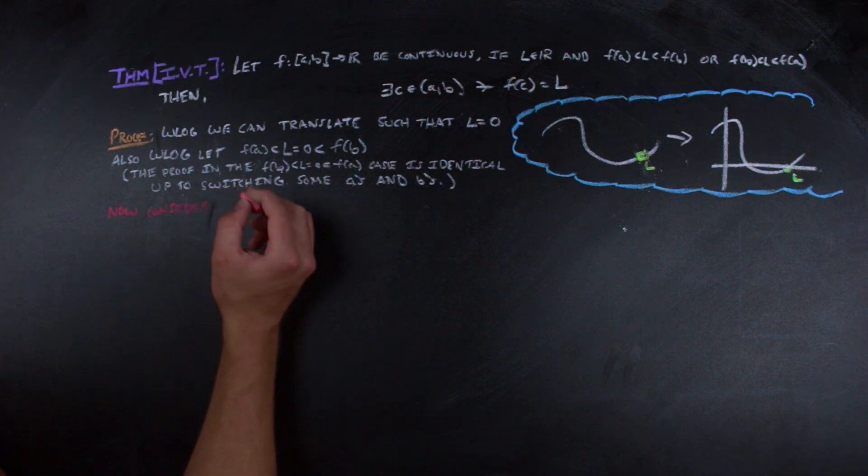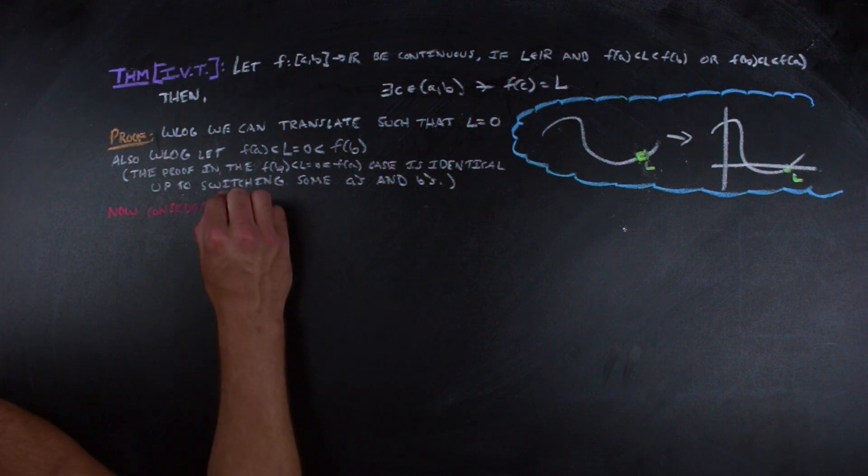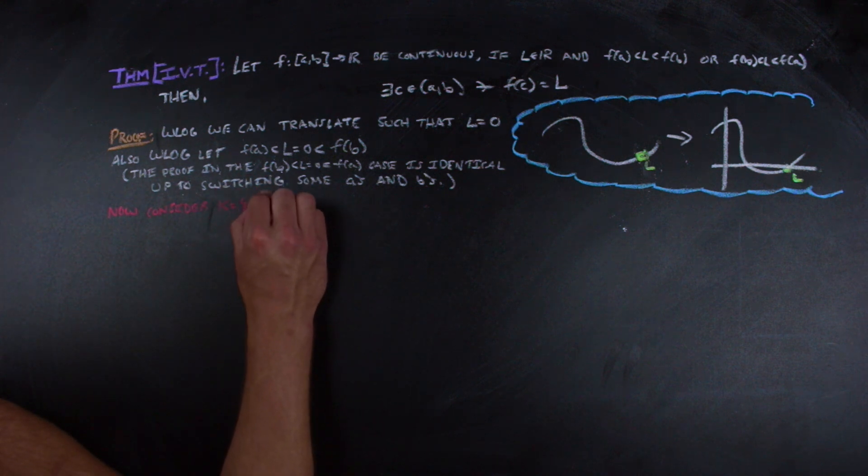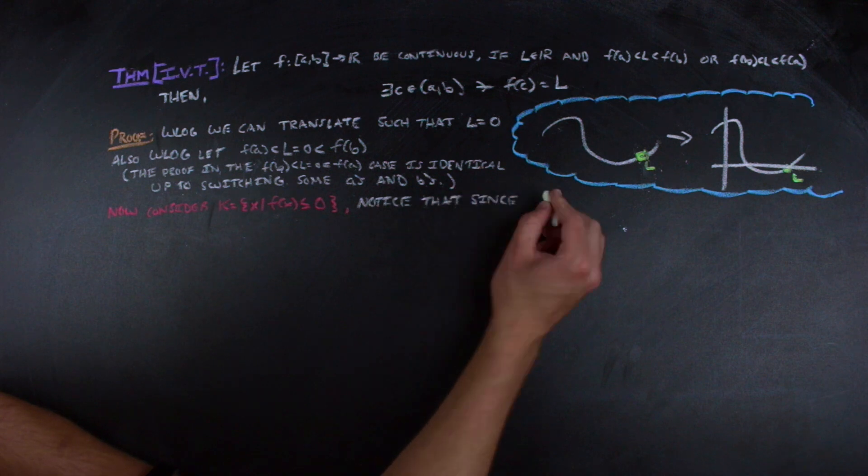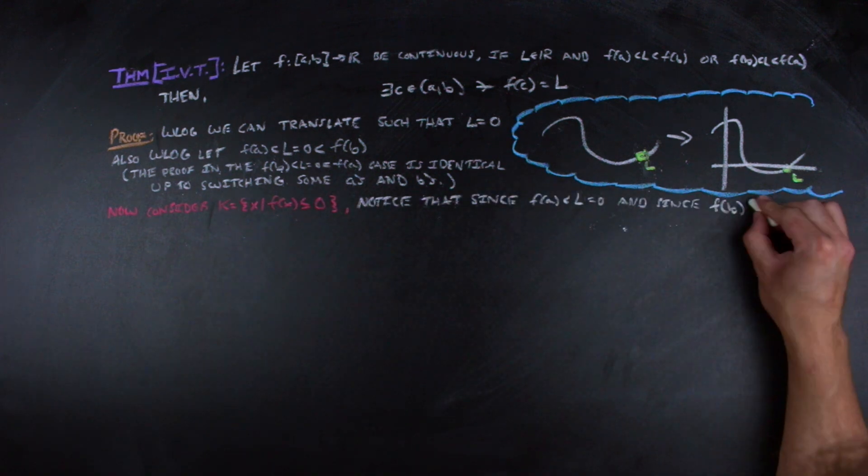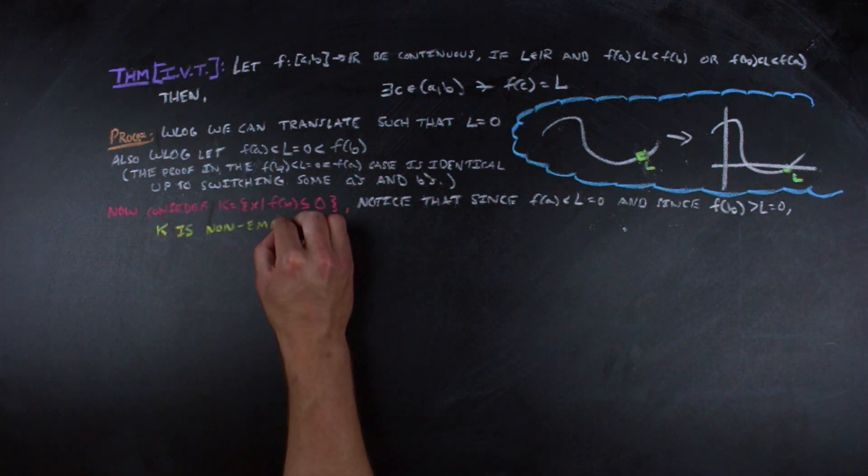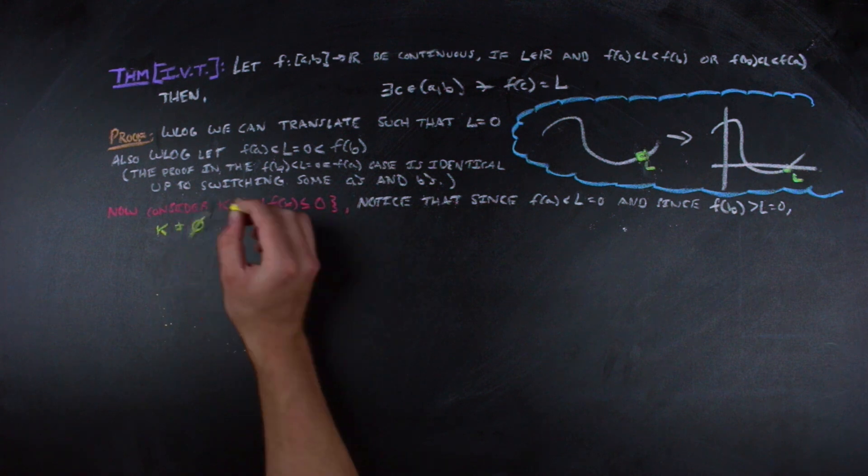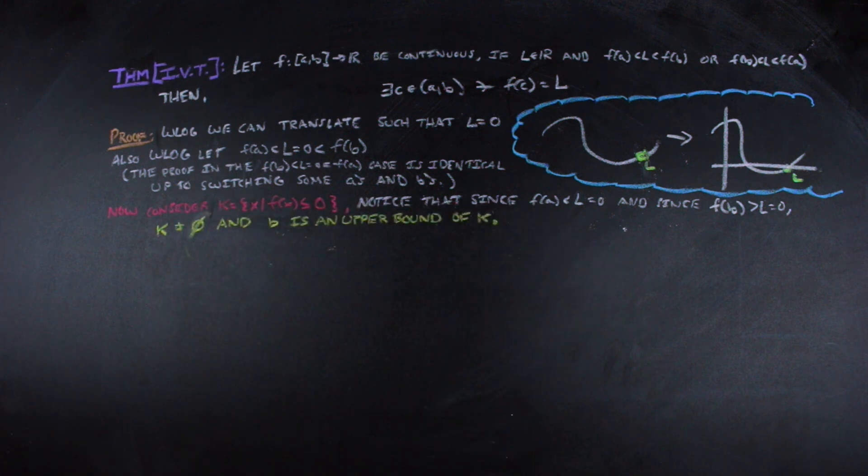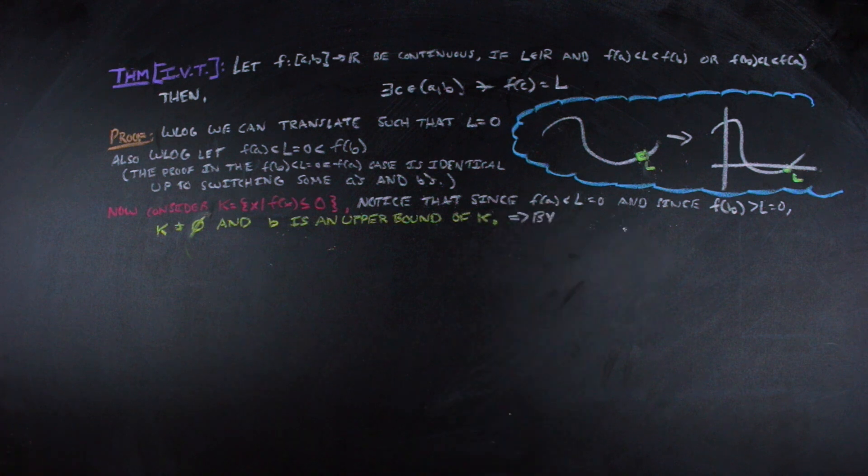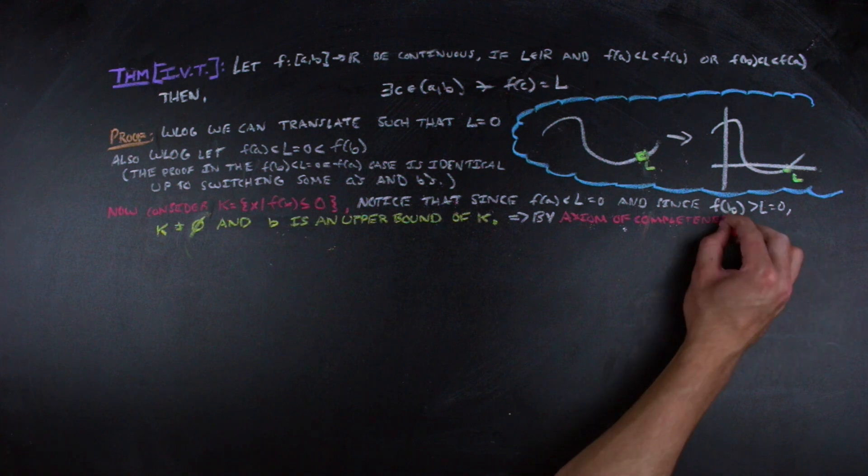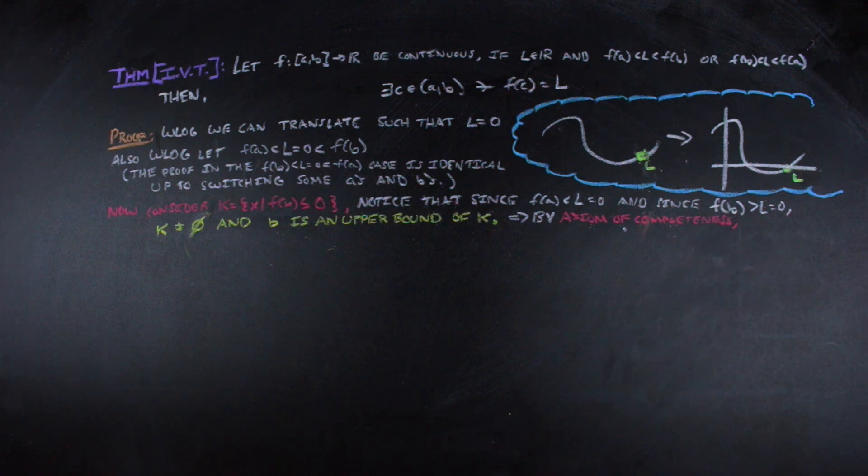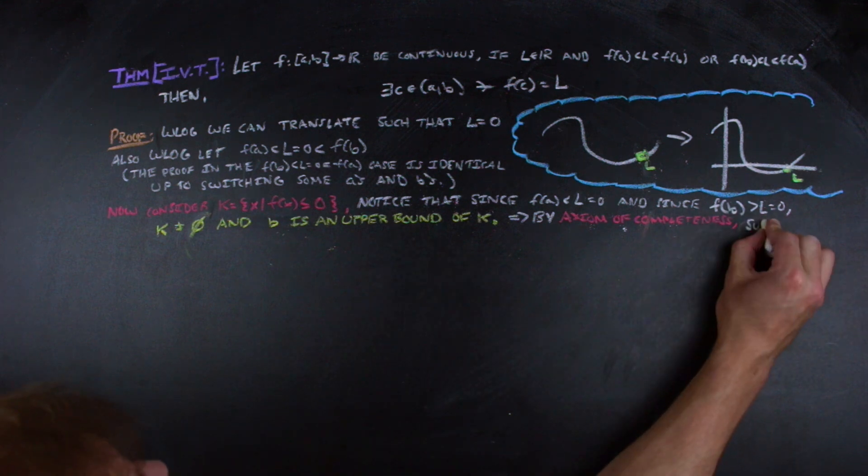We consider a subset of our domain, call it K, which is the set of all points x in the domain of f such that the images of those x are less than or equal to 0. Since f(a) is less than 0 and f(b) is greater than 0, K is not empty and b is an upper bound of K. So K is a subset of the real numbers that is bounded above. Thus, K has a least upper bound by the axiom of completeness, or rather, the supremum of K exists.